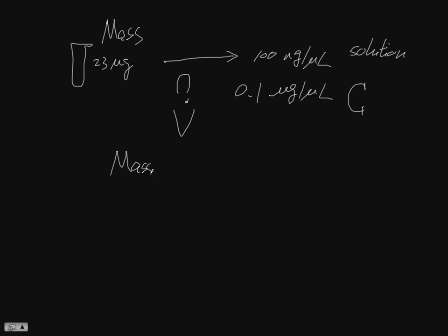So, basically, the mass is equal to V times C. That's the basic formula here. So, we have mass is 23, the volume times 0.1, and I got this is 230 microliter.